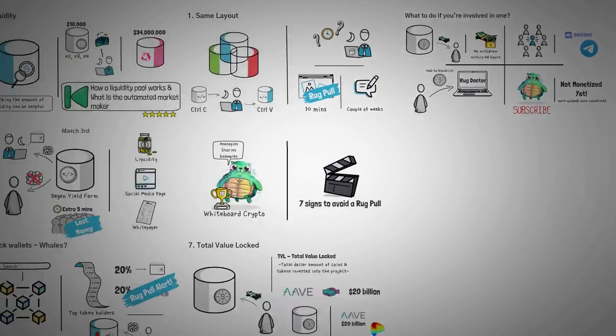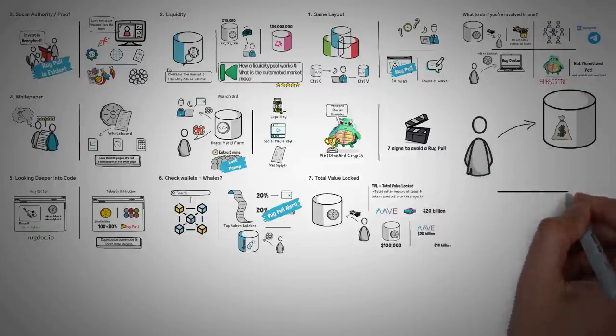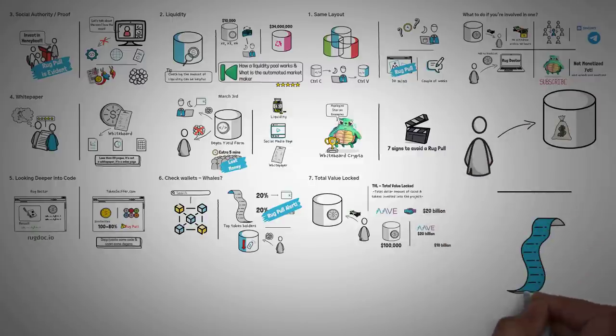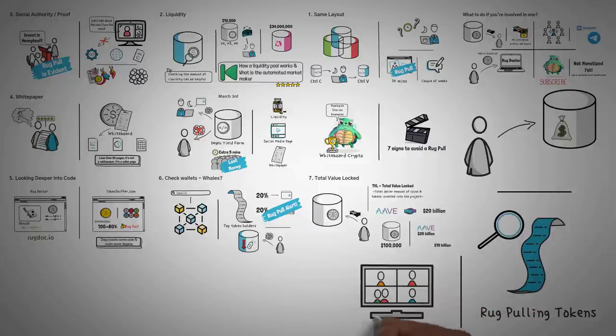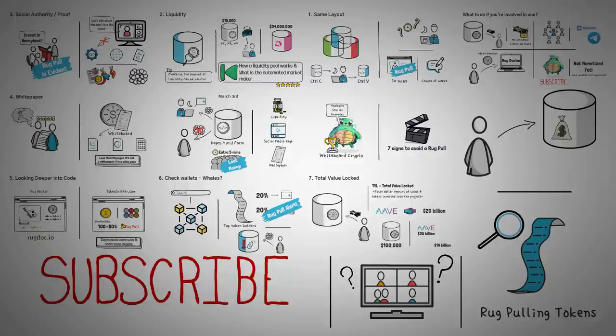So, to summarize this video in an out-of-order fashion: one, invest in projects that already have a bunch of money in them. Two, do your due diligence by checking popular rug pull lists and checking wallet amounts. Three, join a project's community and ask specific questions about their white paper. Four, reach out to us and we would love to check out their project for free. You can join our Discord for free with the link below.